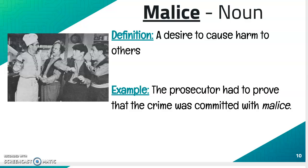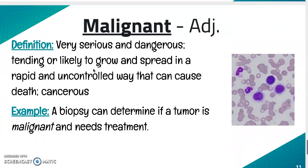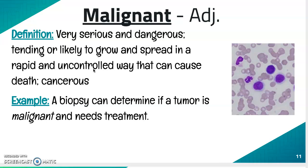Malignant. Malignant is an adjective. The definition means very serious and dangerous, tending or likely to grow and spread in a rapid and uncontrolled way that can cause death — cancerous. Example: A biopsy can determine if a tumor is malignant and needs treatment.